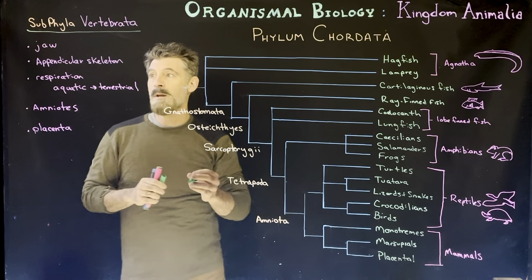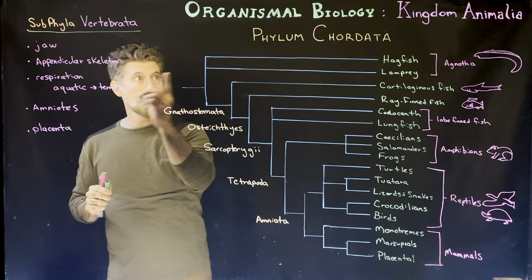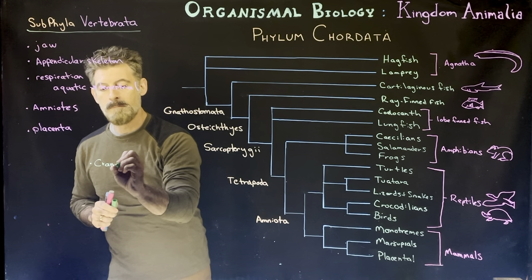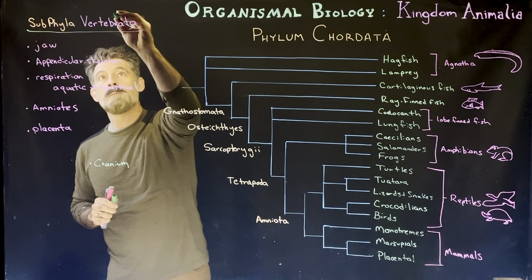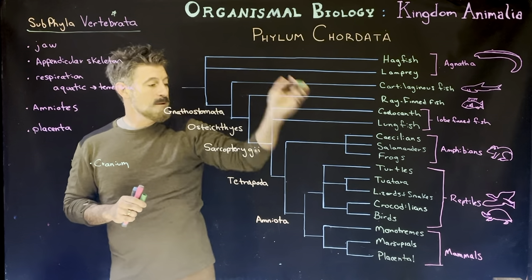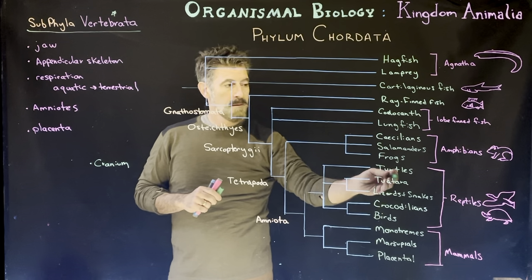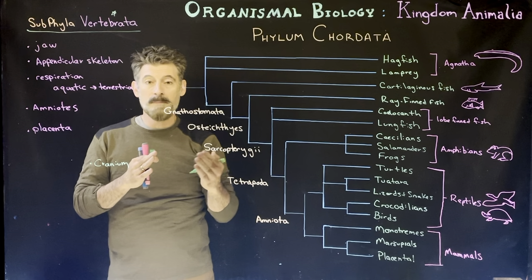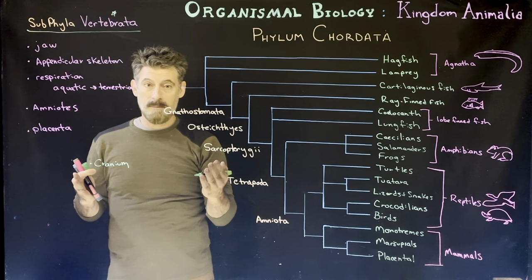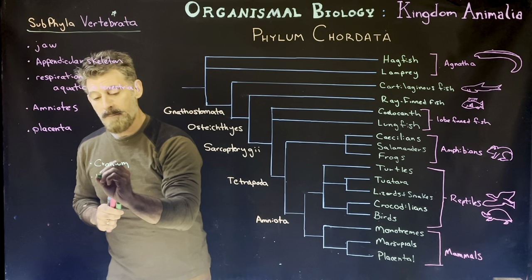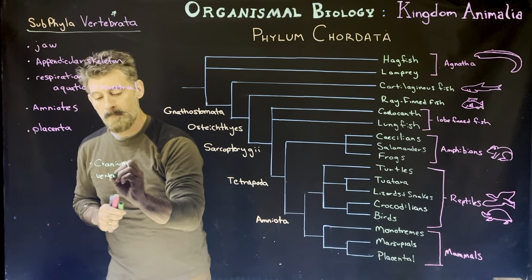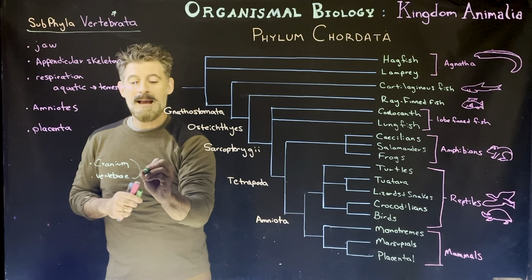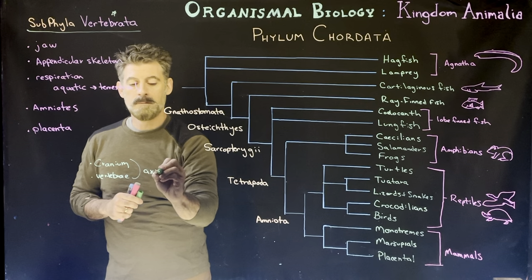Starting with vertebrata — they all have to have the chordate characteristics because they're Chordata, and they all also have to have a cranium. Pretty much all these groups have vertebrae, and then we get to some members that don't have vertebrae, but they all have a cranium. Together the cranium and vertebrae form what we're going to call the axial skeleton.